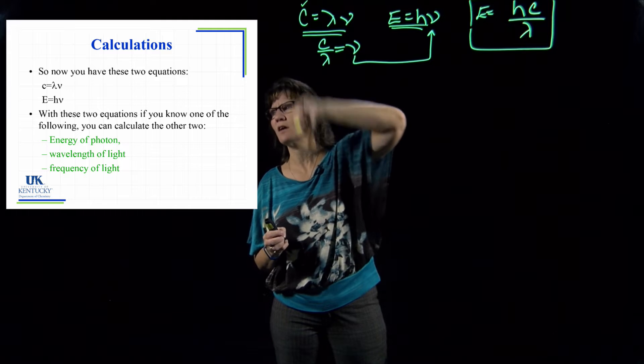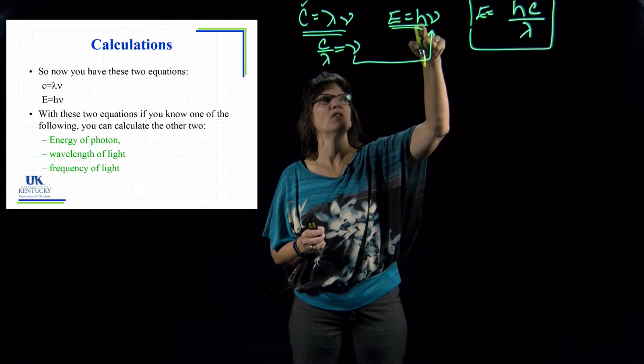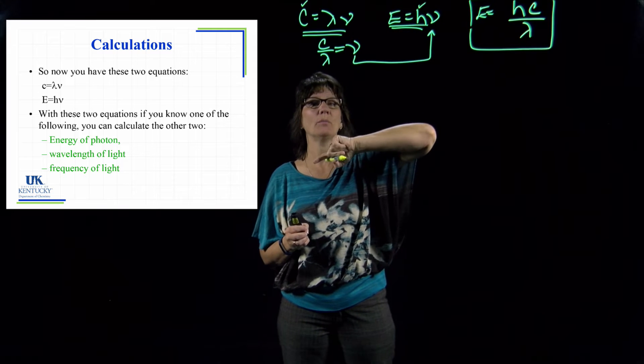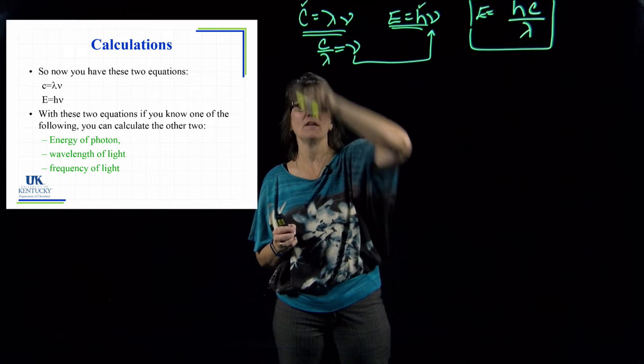Now this is not a variable, that's a constant—speed of light. This is not a variable, this is a constant—that's Planck's constant—that will be given to you on a periodic table.